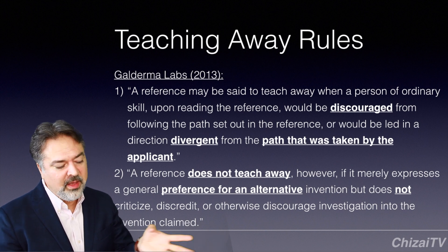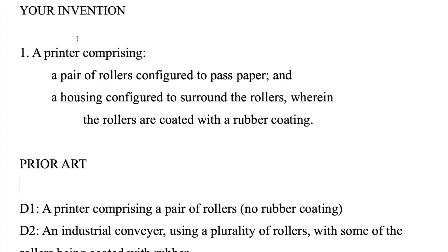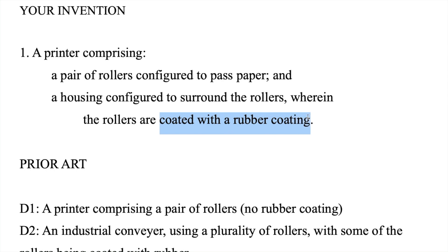Let's look at an example. You may recognize this claim if you also watched the Gijits de Kouka video I did earlier — I'm going to put a link to it here. In that other video, I had a printer comprising a pair of rollers and a housing. So here we are: your invention, claim one — a printer comprising two things: a pair of rollers and a housing, and the rollers are coated with a rubber coating.